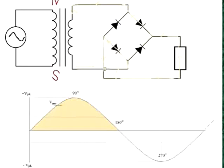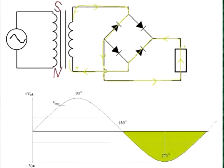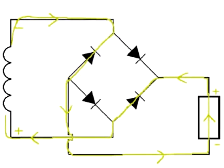So this is the positive alternation in this path — current is going the same direction through the device, so the polarity is the same. And with the negative alternation of the AC waveform, it is still going through the device in the same direction, using two different diodes of what is called a full wave bridge rectifier, powering the device with the same polarity.